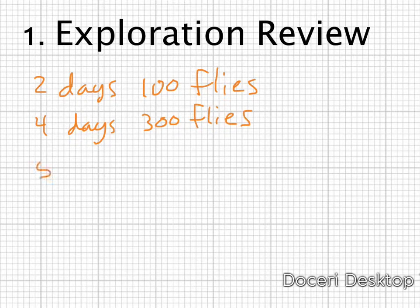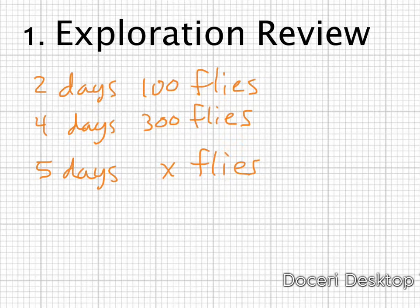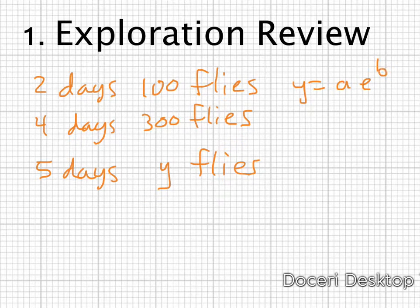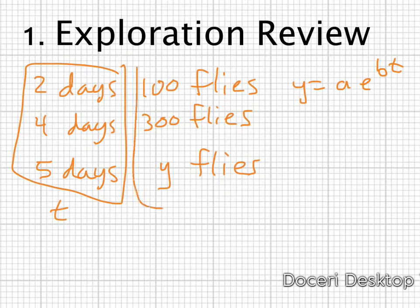The question the scientist wants to know is after how many days, how many flies do I have? Our x value is going to be the number of flies after five days, and we're going to replace that with y. We're going to use the equation y equals a e to the bt, because this is a population growth model — the population is increasing at an exponential rate. The days are t, and the number of flies is y. We have to first find our a and b values.